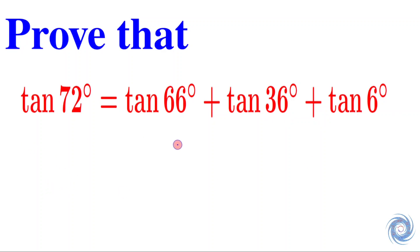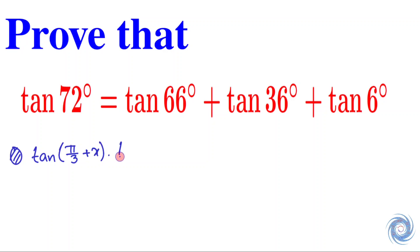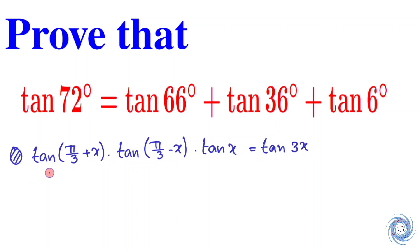We have to prove this equality. First, let us prove the following identity: tan(π/3 + x) times tan(π/3 − x) times tan x is equal to tan 3x. So we have to prove this result.